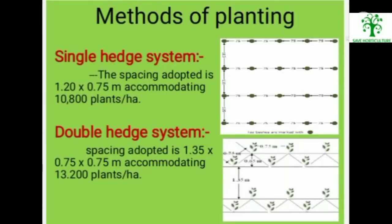Methods of planting: two types — single-hash system and double-hash system. In the single-hash system, spacing adopted is 1.20 × 0.75 metres, accommodating 10,800 plants per hectare. In the double-hash system, spacing adopted is 1.35 × 0.75 × 0.75 metres, accommodating 13,200 plants per hectare.